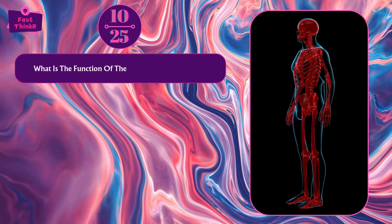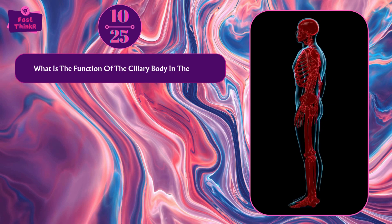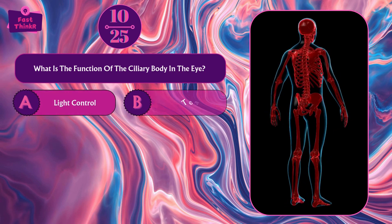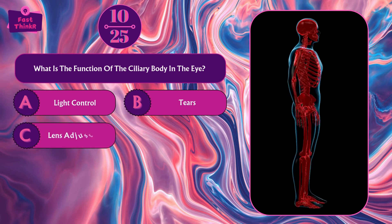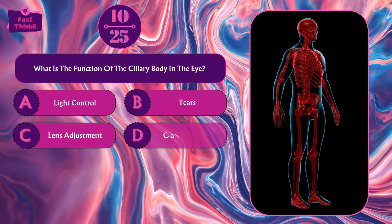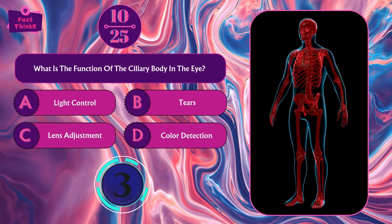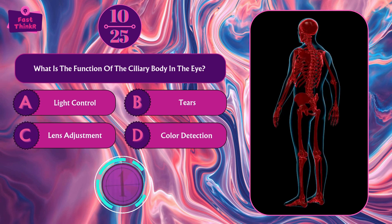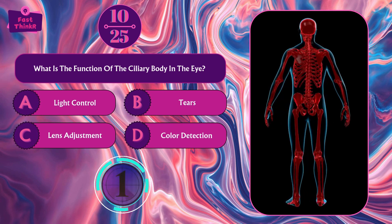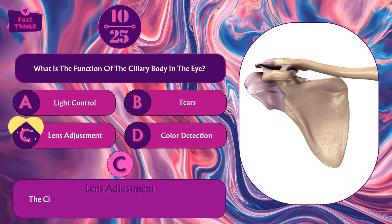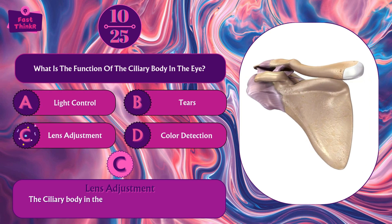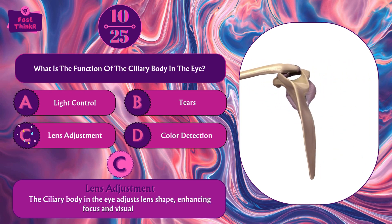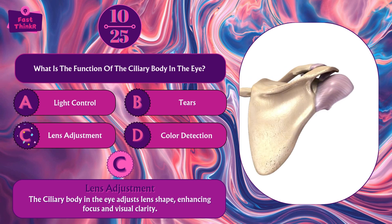What is the function of the ciliary body in the eye? Light control, tears, lens adjustment, or color detection? Option C — lens adjustment. The ciliary body in the eye adjusts the lens shape, enhancing focus and visual clarity.